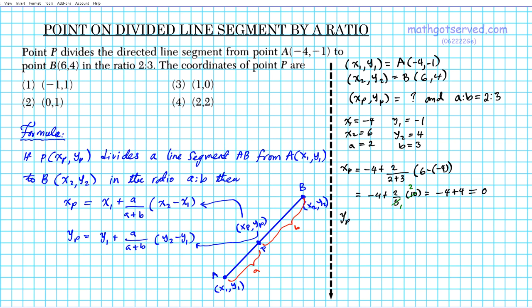So Y coordinate of point P, same procedure, but we're going to use the Y1, Y2, and B. So Y1 is -1 plus A over A plus B. We already know it's 2 over 5, so we can just copy that. This is the same ratio that we're using for X sub P. And then times Y2 minus Y1. And then simplifying that, -1 plus 2 over 5.